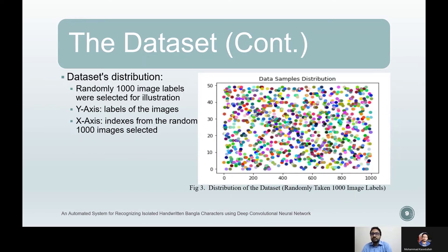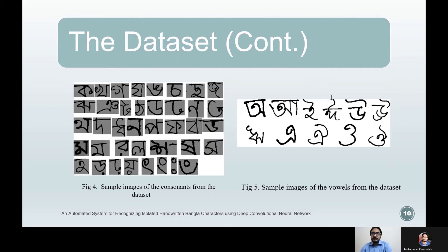To see the dataset's distribution, 1,000 image labels were randomly selected and illustrated. The labels are on the y-axis where each number denotes the corresponding class. The numerical numbers denote the alphabet classes chronologically. The dataset contains handwritten characters collected from a wide range of people of different ages, ensuring a variety of forms are available for every character. Sample images of consonants and vowels from the dataset are shown here.